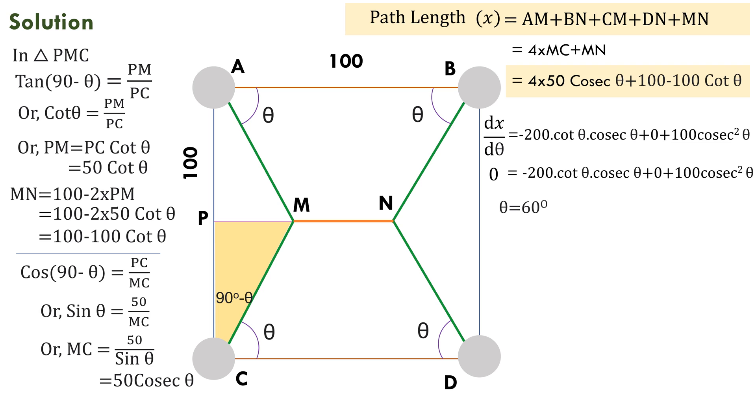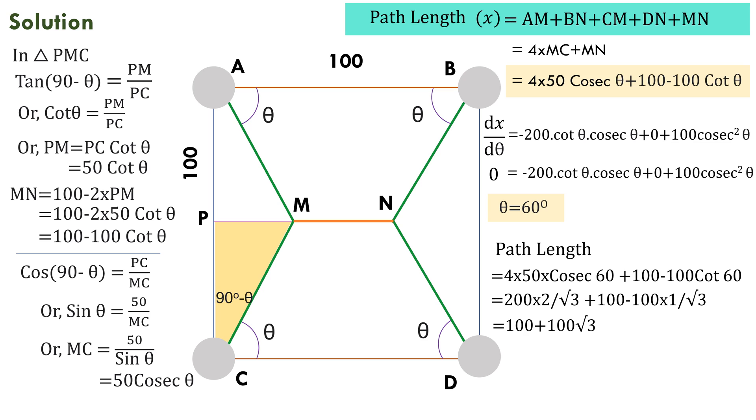Solving we get theta equals 60 degrees. Therefore, the value of theta at which this path will be even shorter is 60 degrees. Now, let's actually find out the length of this path. Upon substituting the value of theta in this expression, we get total path length equals 273.21 km which is shorter than our earlier path which was 282.8 km.